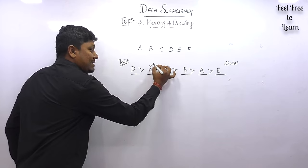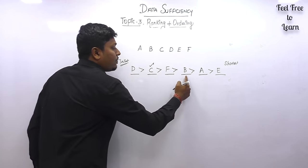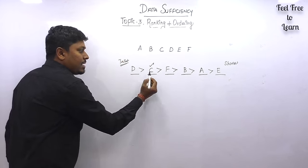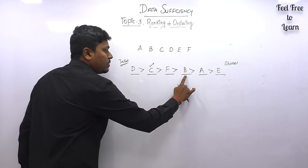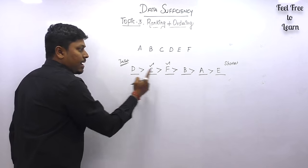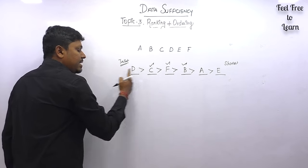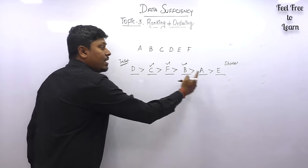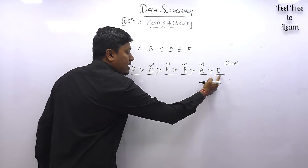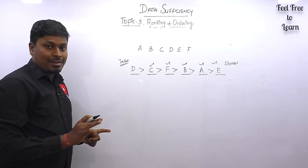In this arrangement: C is shorter than only one person and taller than four persons. F is shorter than two persons and taller than three persons. B is shorter than three persons and taller than two persons. A is shorter than four persons and taller than one person. E is the shortest person among all the friends.